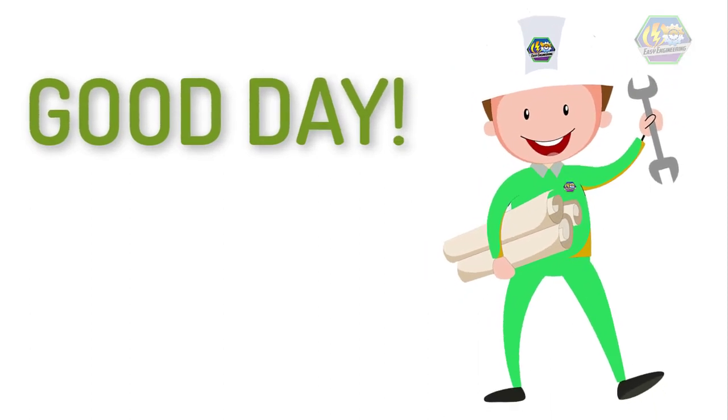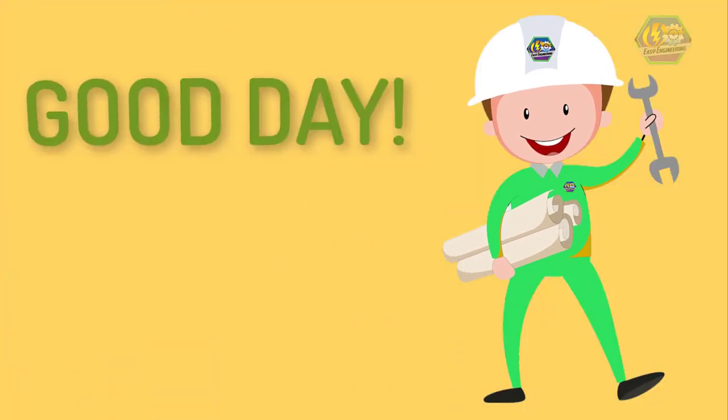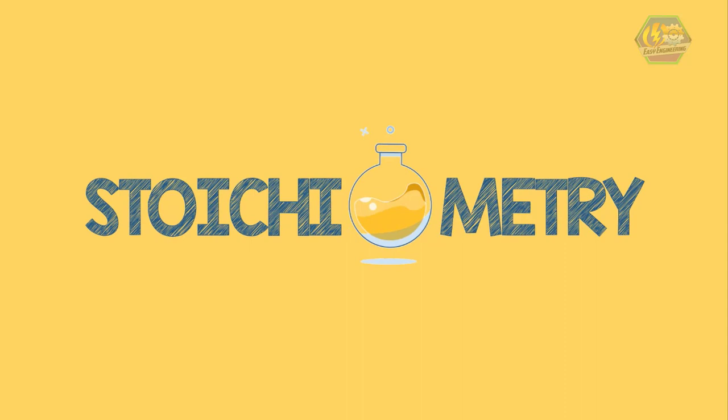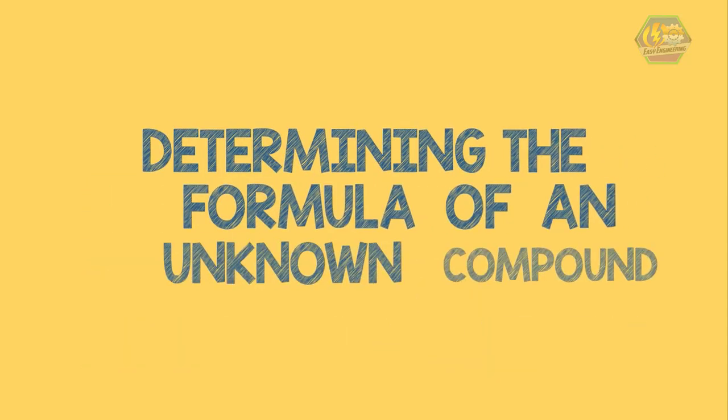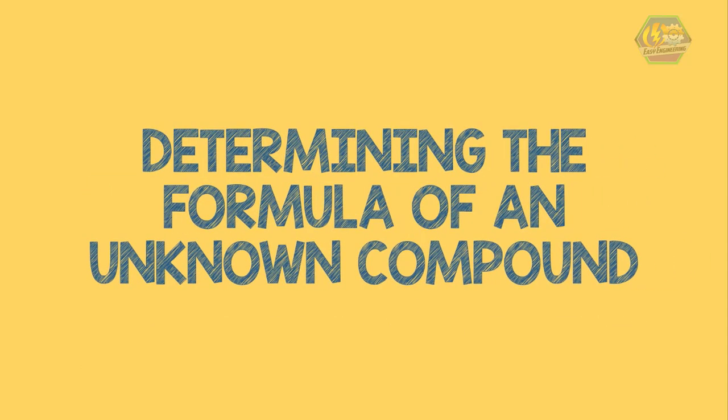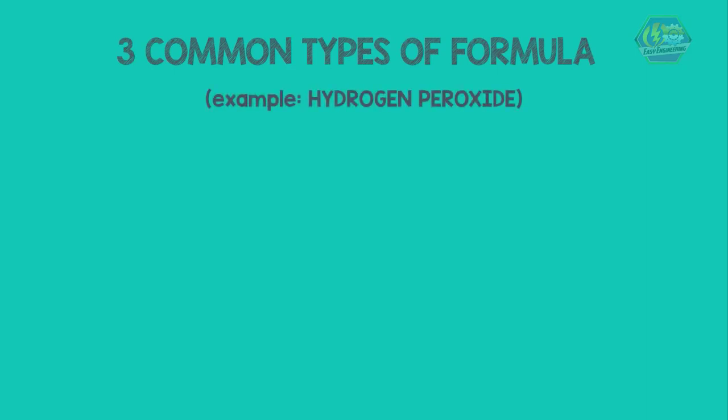Good day learners, this is Easy Engineering. This time we're going to talk about stoichiometry, determining the formula of an unknown compound. So to start with, let us compare three common types of formula using hydrogen peroxide as an example.